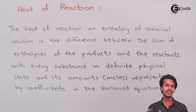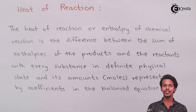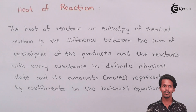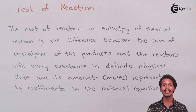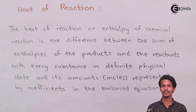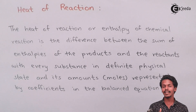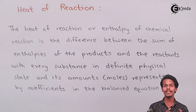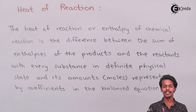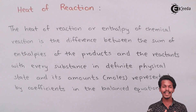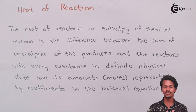We should always consider that the reaction we are studying is stoichiometrically balanced. If it is balanced, it is easy to understand, because this deals with the change in enthalpy when all reactants and products have particular stoichiometric coefficients. Whatever change we observe will then be a precise change in enthalpy during that process.